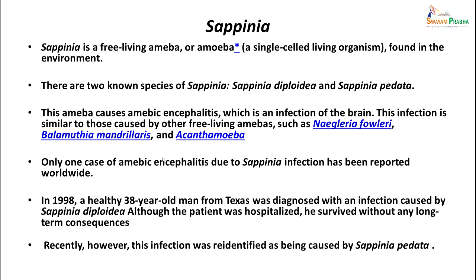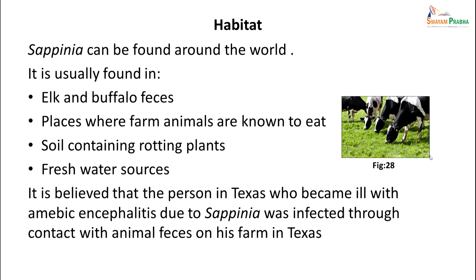Another organism, Sappinia, which has recently been found to be causing similar infection, is again a free-living amoeba found in the environment. There are two known species: Sappinia diploidea and Sappinia pedata. The amoeba causes amoebic encephalitis similar to other free-living amoeba infections such as Naegleria, Balamuthia, and Acanthamoeba. Only one case of amoebic encephalitis due to Sappinia has been reported worldwide. In 1998, a healthy 38-year-old man from Texas was diagnosed with this infection; he was hospitalized but survived without sequelae. The infection has since been re-identified and is known to be caused by Sappinia pedata. It is found in environments where elk and buffalo feces are present, near farm animals, and near rotting plants in fresh water sources. The Texas patient is believed to have been infected through contact with animal feces on his farm.